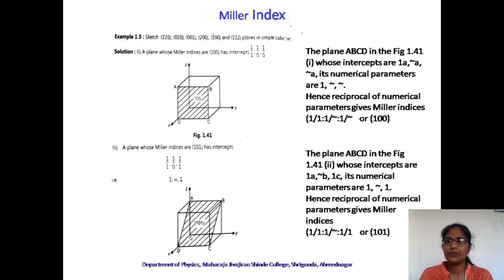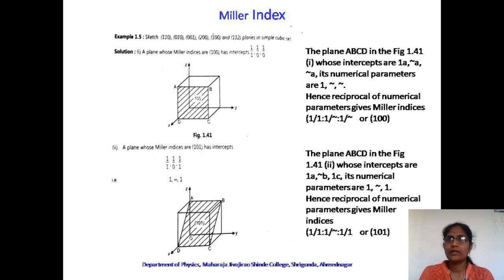Like this, one can find various planes: the (1 1 1) plane intercepts all three crystallographic axes at 1a, 1a, 1a. The (1 0 0) plane intercepts only the x axis. The (0 1 0) plane intercepts only the y axis. The (0 0 1) plane intercepts only the z axis. The (1 0 1) plane intercepts x and z axes only. The (1 1 0) plane intercepts x and y axes only. The (0 1 1) plane intercepts y and z axes. One can find out the intercepts and draw Miller planes with the help of any given Miller index.